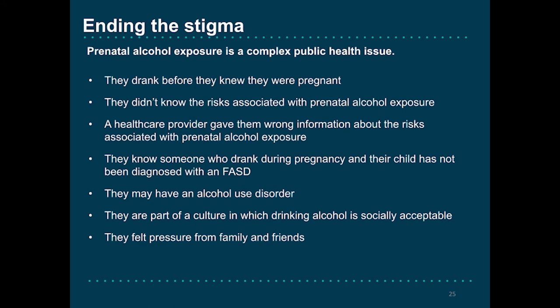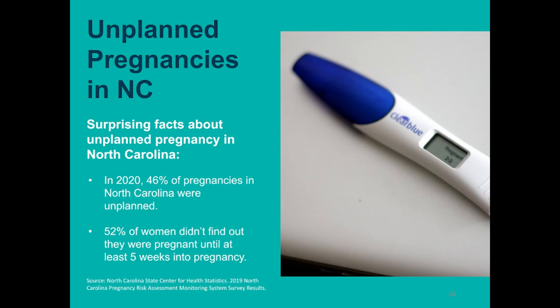Here are some of the documented points from that discussion. In North Carolina, 46% of pregnancies are unplanned, and this shows just how important it is to choose an effective form of birth control that works for you and your partner. In addition, more than half of women didn't find out they were pregnant until at least 5 weeks into pregnancy, and 14% didn't find out until at least week 9. Because they didn't find out they were pregnant for at least a month, they may have been drinking alcohol during that time.